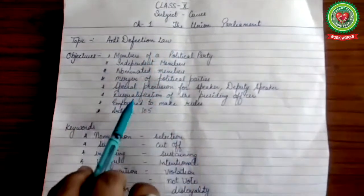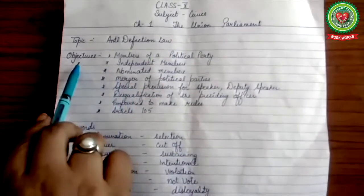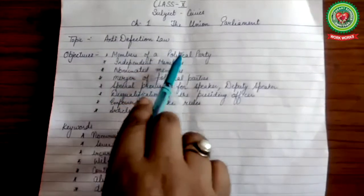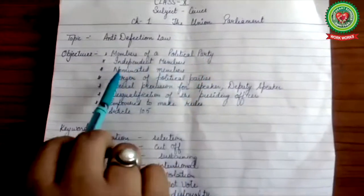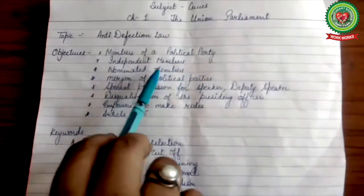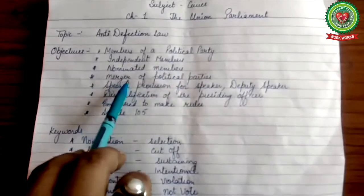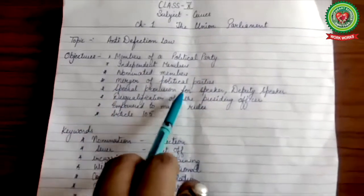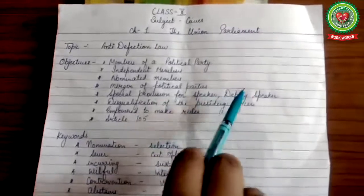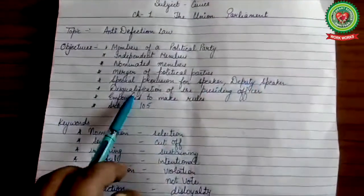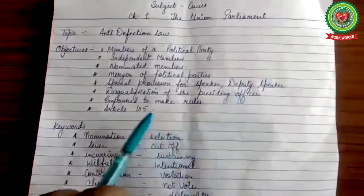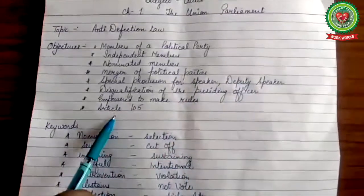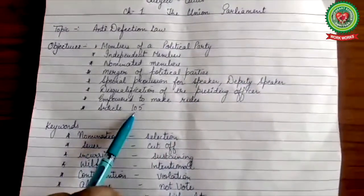We will discuss the following points. The objectives of today's topic are: member of a political party, independent members, nominated members, merger of political parties, special provisions for speaker, deputy speaker, disqualification of the presiding officer, empowered to make rules, and Article 105.